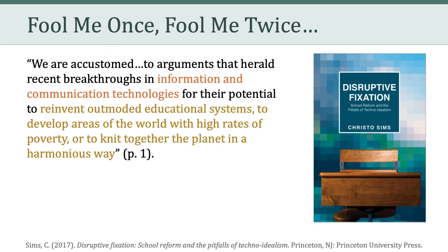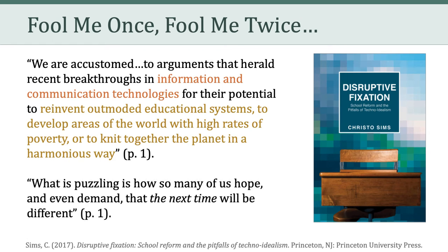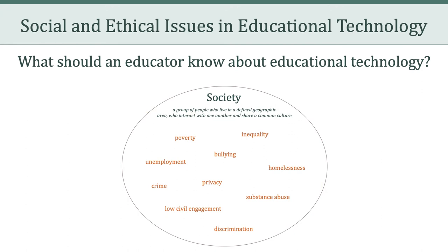On the very first page, Sims reveals his perspective, stating that what is puzzling is how so many of us hope and even demand that the next time will be different. He acknowledges that technology never has addressed all of these problems, and so he's puzzled by the continued hope and demand that the next round of technologies is actually going to make a difference. This ties into where we began the course — society has long-standing and stubborn societal ills such as poverty, homelessness, discrimination, and low civic engagement. This brings us to an important concept Sims calls the perennial rejuvenation of optimism and idealism.